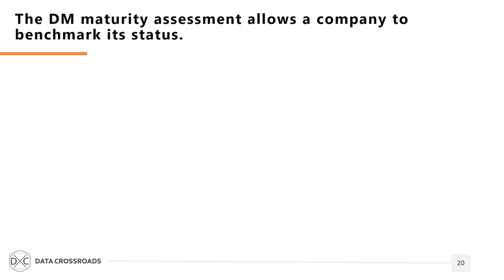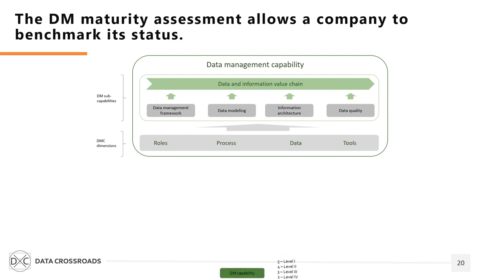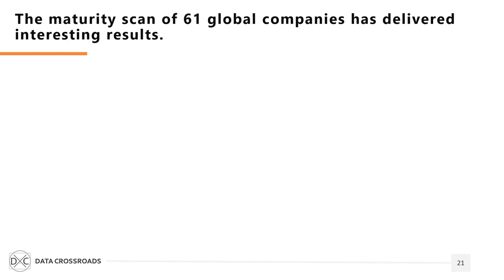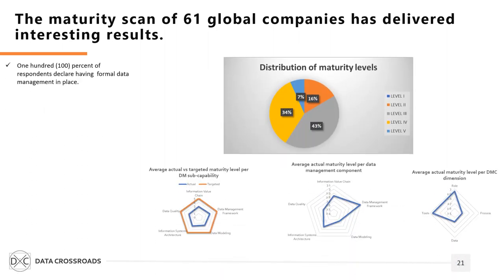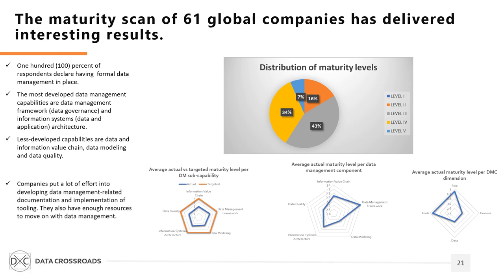I would like to share with you the maturity assessment technique, which is based on the Orange Model of data management. The data and information value chain is supported by four data management sub-capabilities. Each answer corresponds with one of five maturity levels and is linked to one of the data management sub-capabilities and one of the four capability dimensions. The first results show that all respondents declare having a formal data management function in place. The most developed capabilities are data management framework and information architecture. The least developed are data and information value chain, data modeling, and data quality. Companies put a lot of effort into developing documentation and implementing tools, but have less success in delivery of actual data management artifacts.